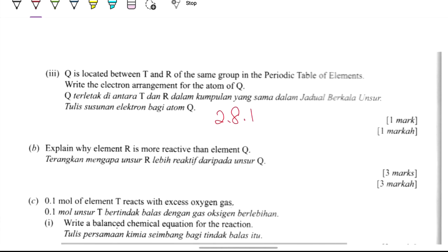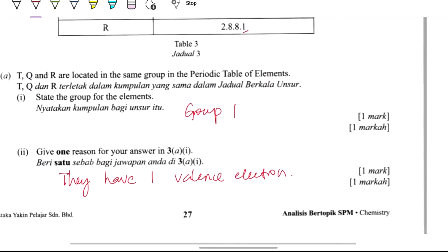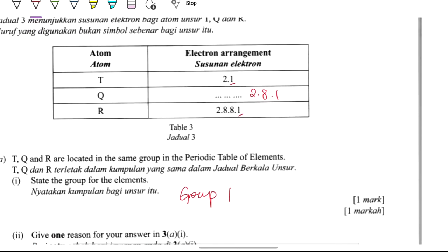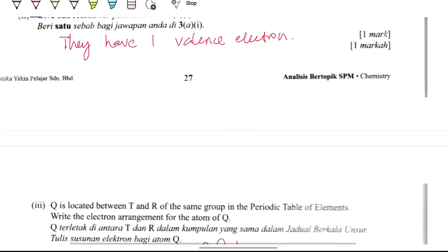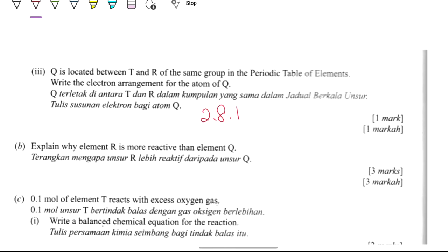Explain why element R is more reactive than element Q. So here, R is more reactive because as going down group 1, the reactivity increases. How many marks? 3 marks means we need to write 3 points.